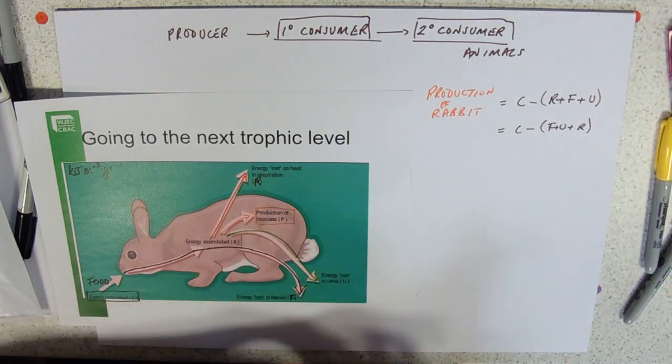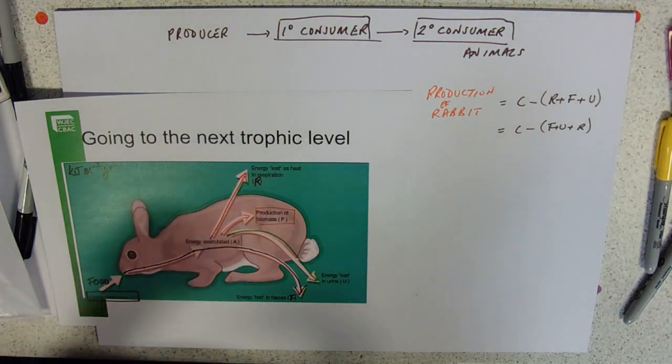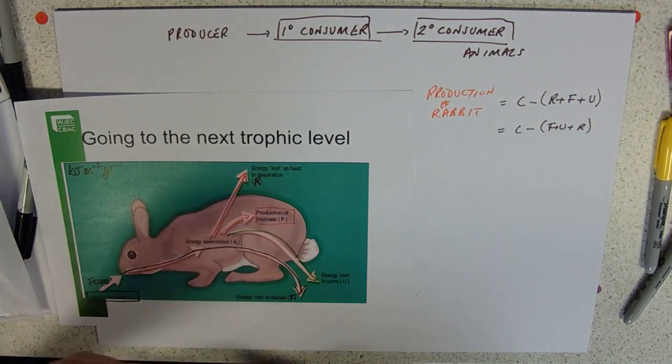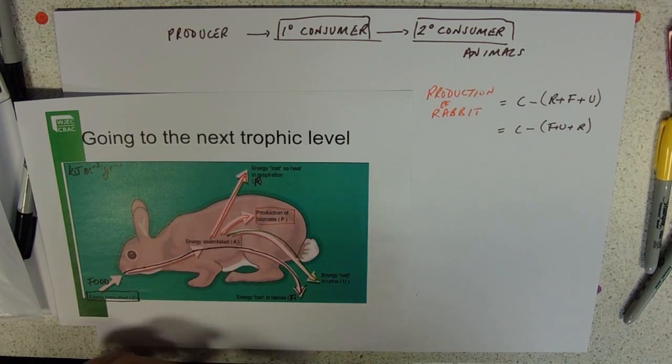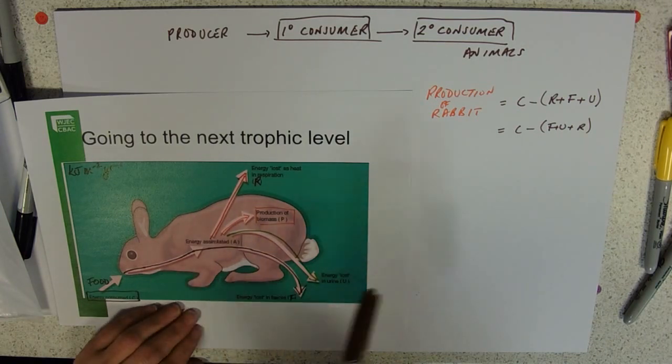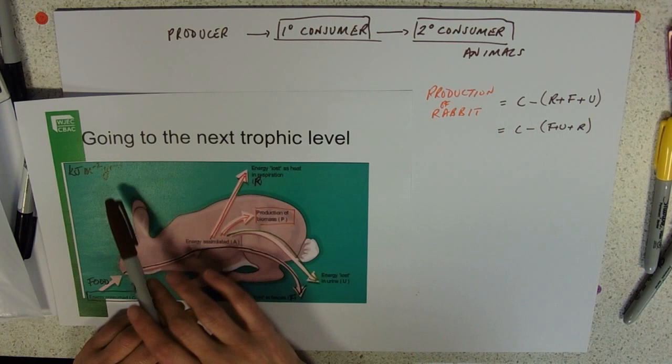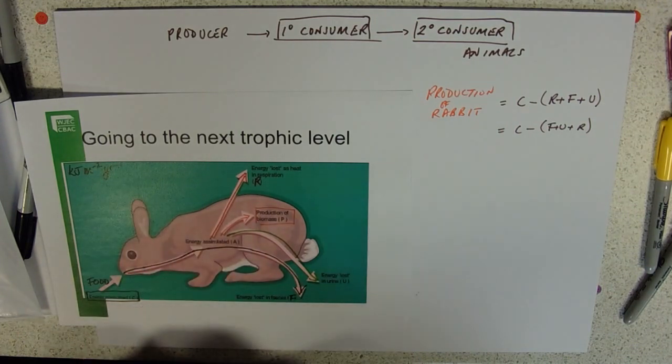I actually like to rearrange that so it says consumption minus FUR. That makes so much sense to me and is really easy to remember. If you were given a calculation, you would have to give it units: kilojoules per meter squared per year.